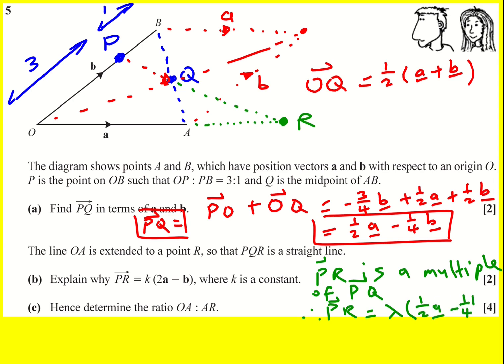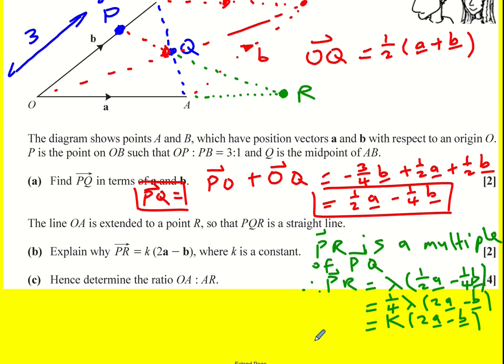So I'm going to get this, but we're nearly there actually, I need a 2a in there. So I'm actually going to factorize out a factor of a quarter, because then I'll get 2a and then I'll get b. And this therefore equals k times (2a - b), where k equals a quarter lambda. And that's it. That's actually all we need to show.